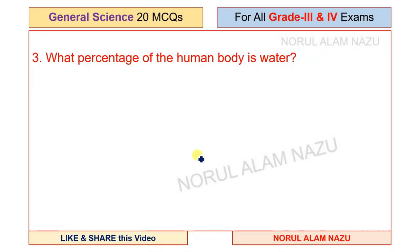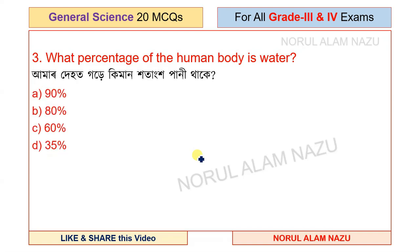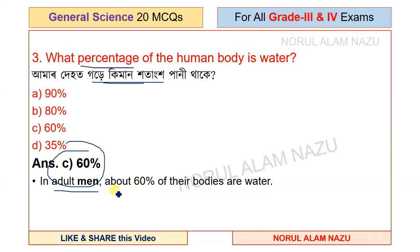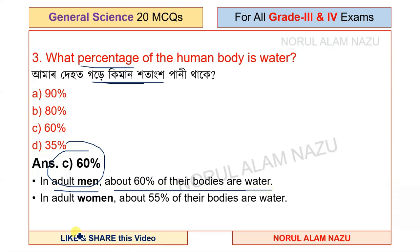What percentage of the human body is water? More than 60%. An adult man has about 60% water in their body, while an adult woman has about 55%.